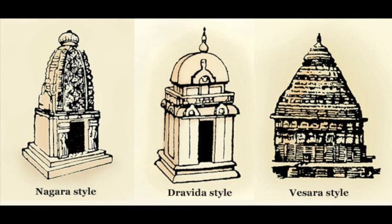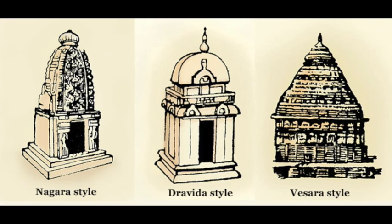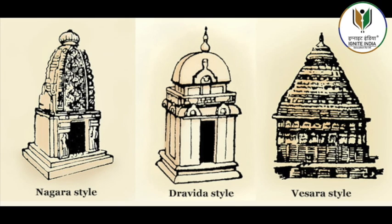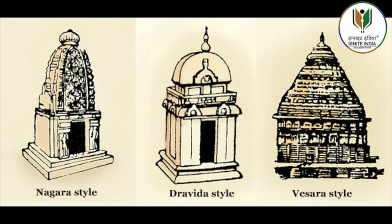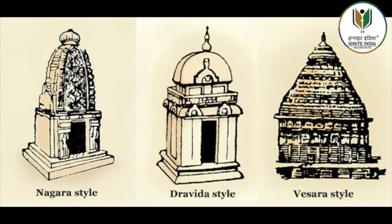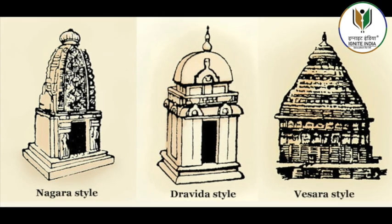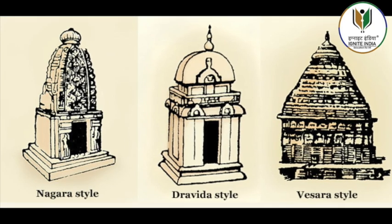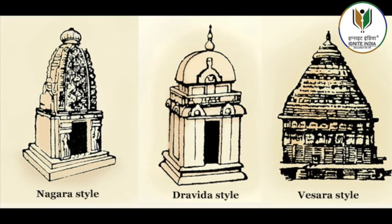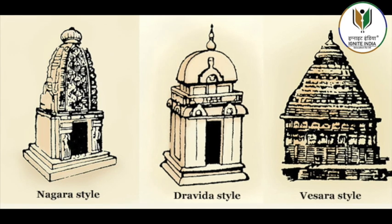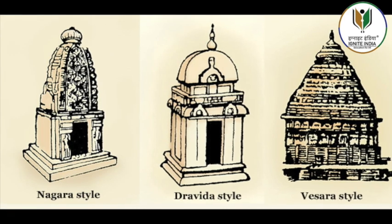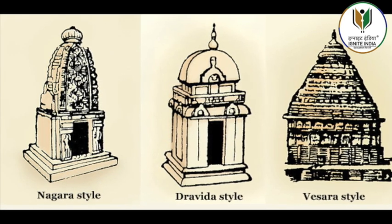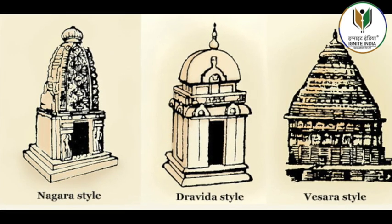A unique form of architecture developed in the hills of Kumaon, Garhwal, Himachal and Kashmir. Kashmir's proximity to prominent Gandhara sites such as Taxila, Peshawar and the northwest frontier lent the region a strong Gandhara influence by the 5th century CE.